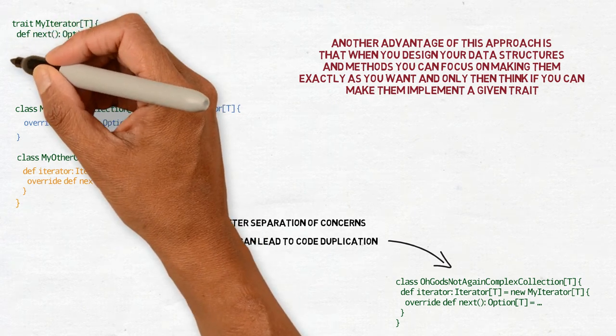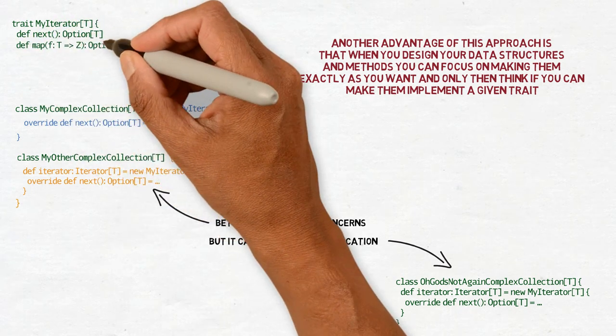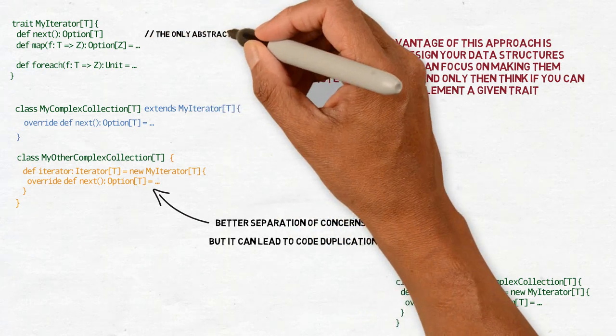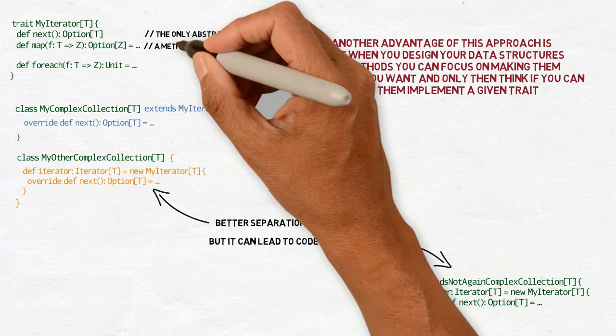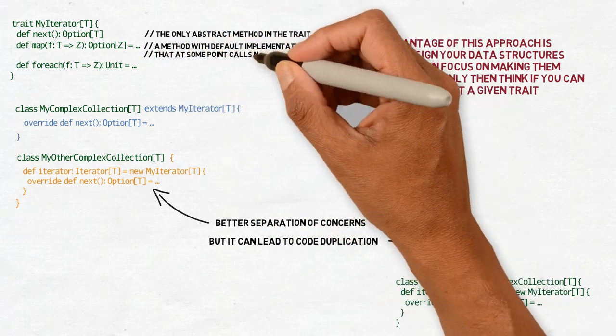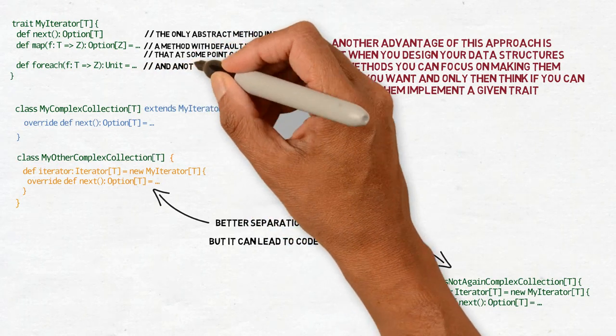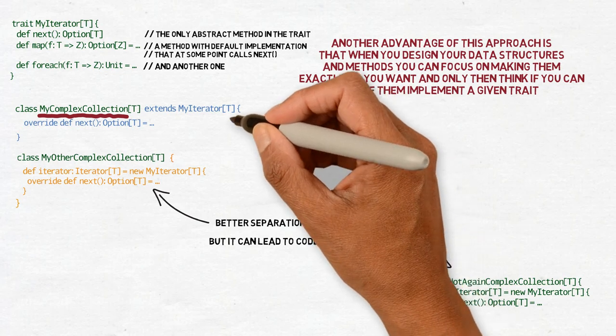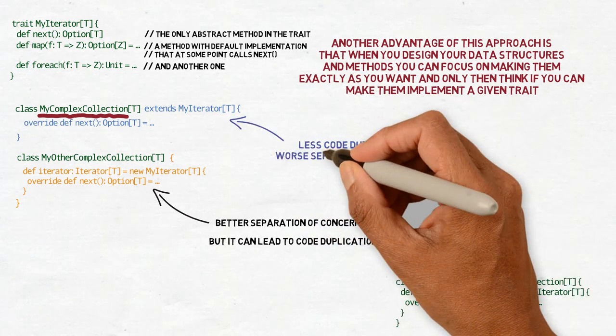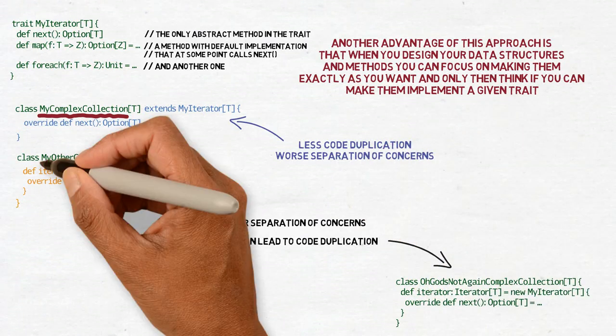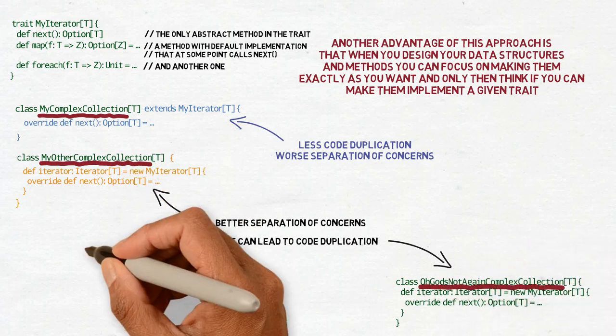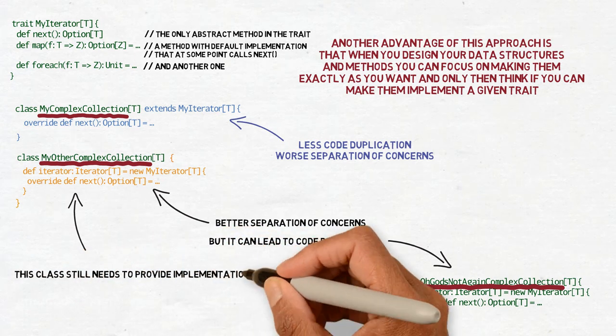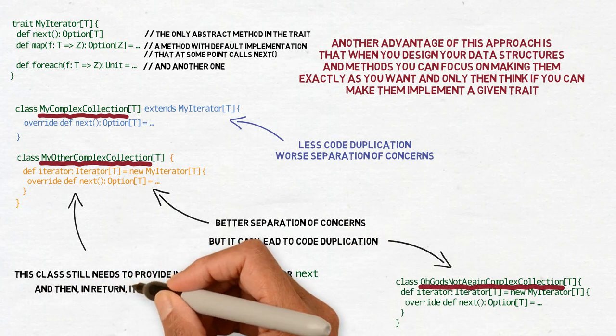One partial solution to this are default implementations of traits methods. The default implementations may then be overridden in the class which implements the trait, or they may be left as they are. For example, the trait myIterator will have only one abstract method, next, but it will have the default implementations of map and forage, which both use that next method. And then we can have a class, for example, myOtherComplexCollection that extends myIterator, and it defines the next method. And then we can have myComplexCollection that creates an iterator, and another myOtherComplexCollection that creates another iterator. A class that implements myIterator needs to provide implementations only for the next method, and in return it gets map and forage for free.